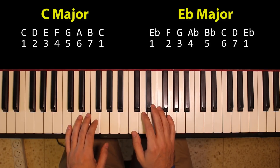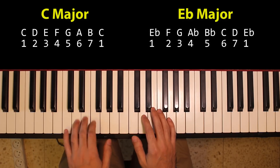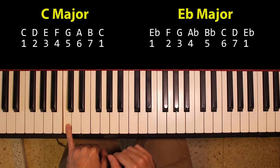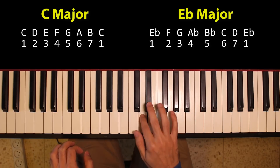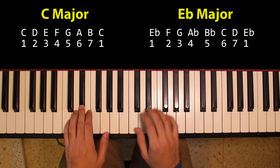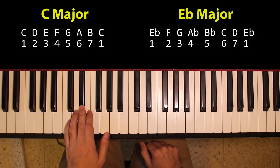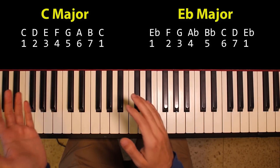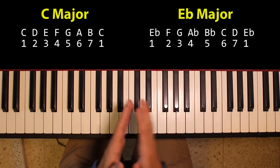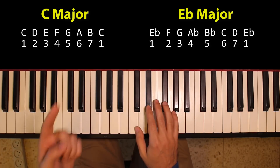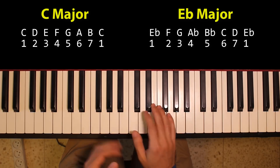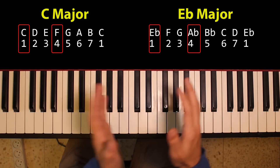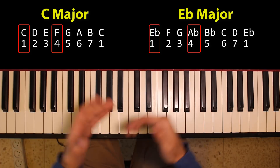The first progression is played out in the key of C major, and the second progression is played out in the key of Eb major. The correct way to think about them is not in terms of chord names — C going to F going to C, or Eb going to Ab going to Eb — but in terms of their scale degrees. In both cases, we're playing the first degree going to the fourth degree, over and over again.